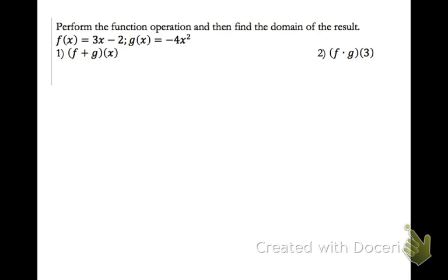Now let's do some function operations and find the domain if needed. We have f of x equals 3x minus 2 and g of x equals negative 4x squared. For number 1, we add f of x and g of x. Since I don't have a specific value to plug in for x, I first think about the domain of each original function. For f of x, this is linear, so the domain is all real numbers. For g of x, squaring any input always gives a real number, so its domain is also all real numbers.